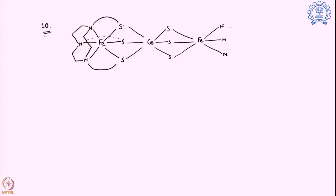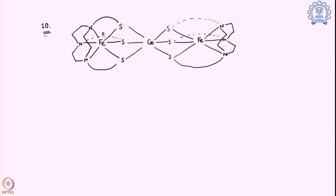The three nitrogens replicate on the other side of the terminal molecule, connected with each ethylene ring, and the sulfurs are also connected symmetrically. This is the structure of the full molecule. The oxidation states are: one iron is 3+, cobalt is 3+, and the other iron is 2+. So we have two irons — one is 3+ and one is 2+ — and the question is: are we going to see mixed valency or not? That is what we are trying to answer, and also what role this cobalt plays in between.